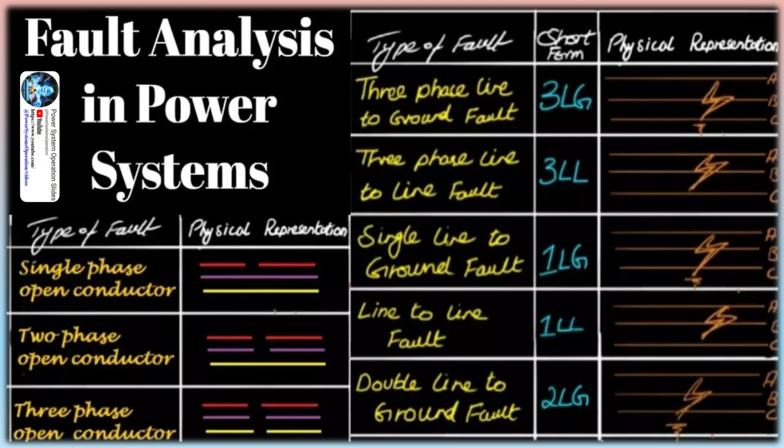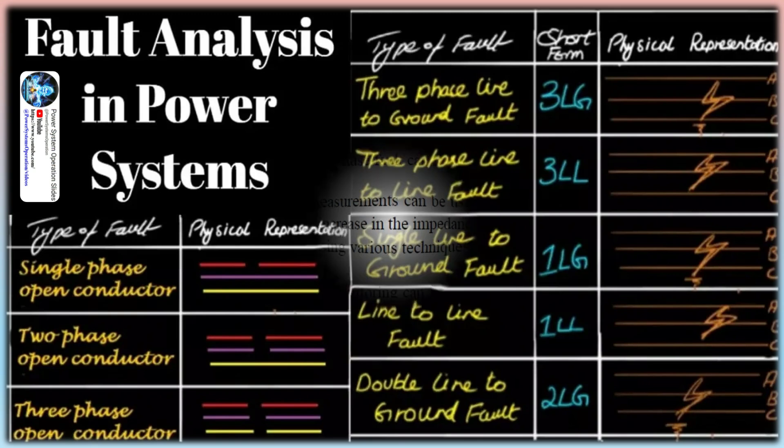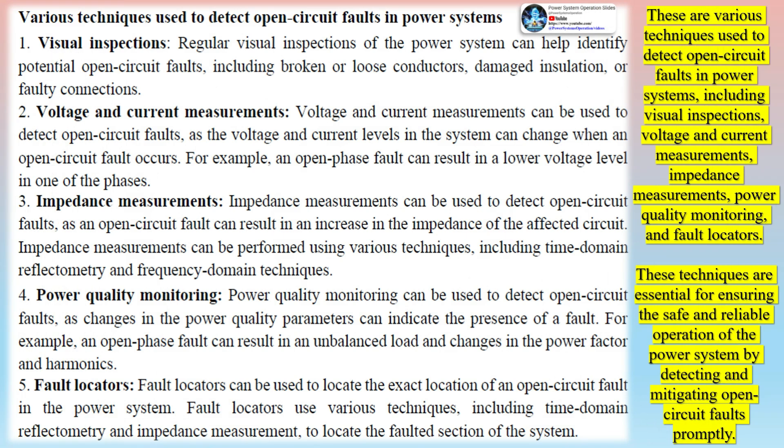Fault locators can be used to locate the exact location of an open-circuit fault, using techniques including time-domain reflectometry and impedance measurement. These techniques — visual inspections, voltage and current measurements, impedance measurements, power quality monitoring, and fault locators — are essential for ensuring the safe and reliable operation of the power system by detecting and mitigating open-circuit faults promptly.